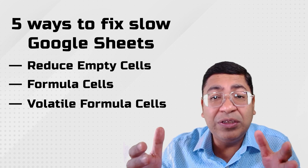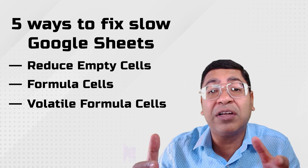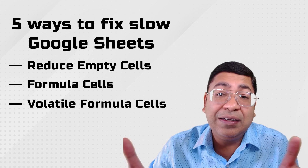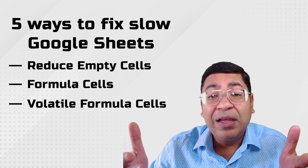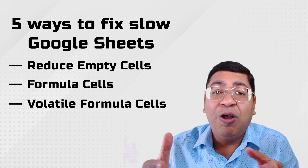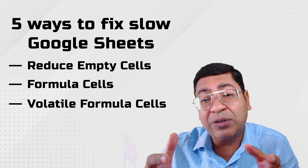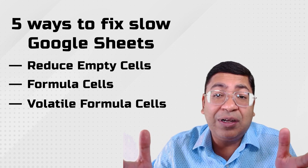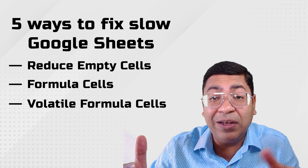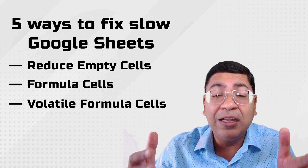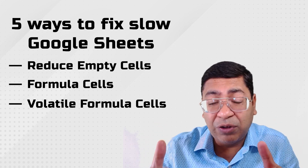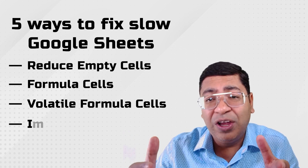Number three: volatile cells. Functions like NOW, TODAY, RAND, and RANDBETWEEN are continuously updating themselves — continuously changing the data inside them. Every time you touch any cell or type anything, all formulas containing calculations related to time, NOW, or random functions get recalculated. That consumes a huge amount of bandwidth, so use them cautiously and reduce the number of volatile formula cells you are using.